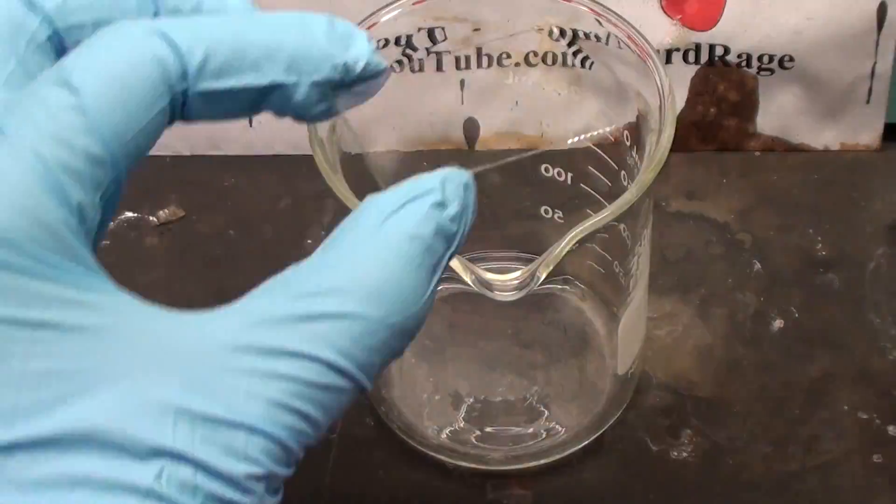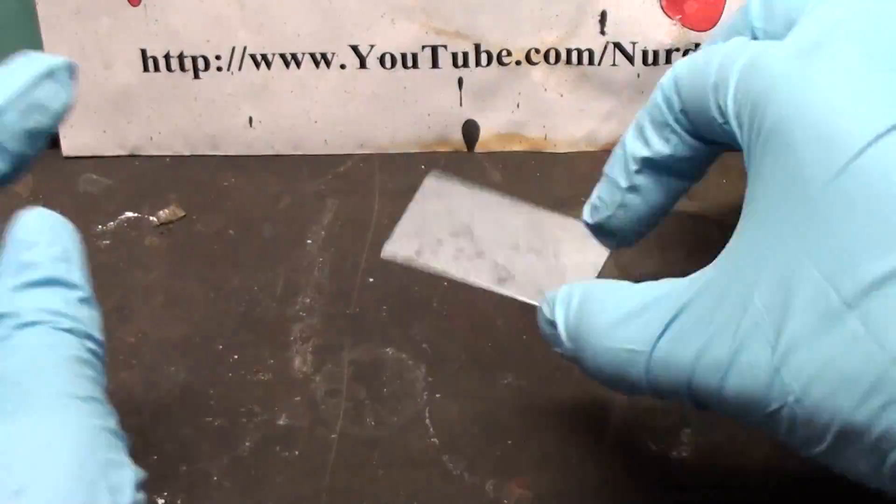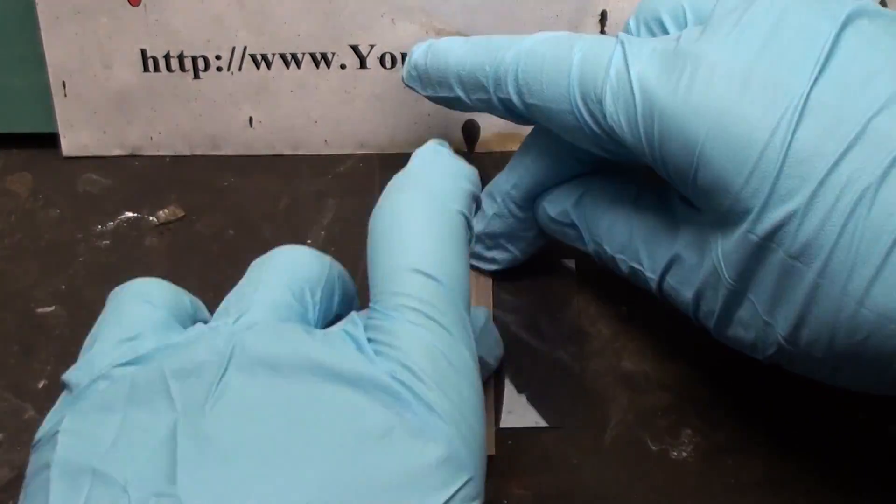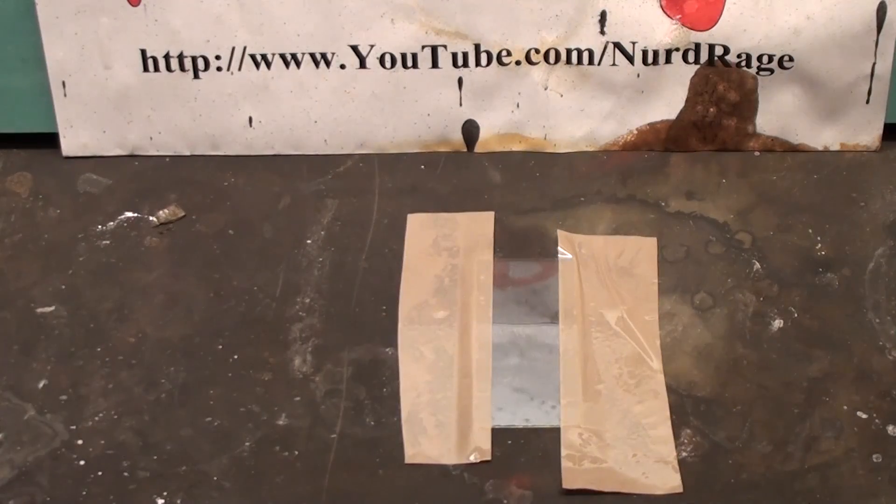Now thoroughly clean the slide with acetone or any other cleaning solution until it's spotless. Now tape it down on three sides about half a centimeter from the edge. We're using the thickness of the tape to control the thickness of the titanium dioxide layer we'll be applying.